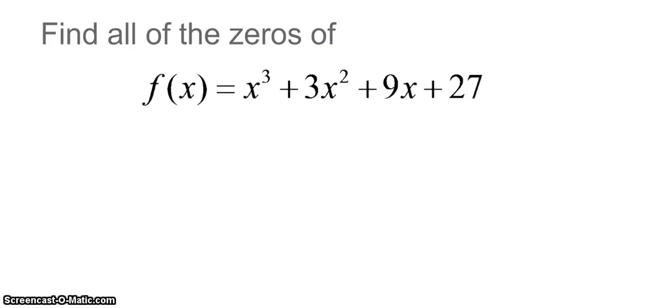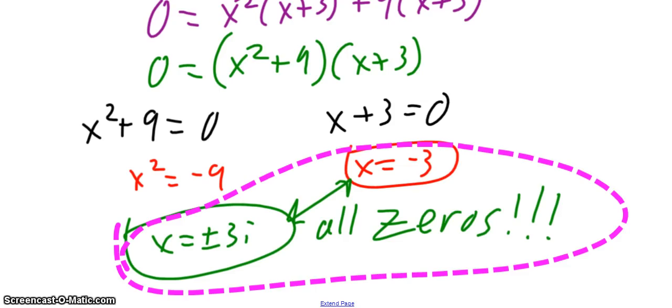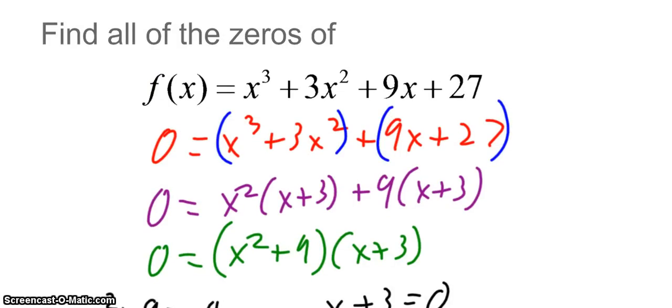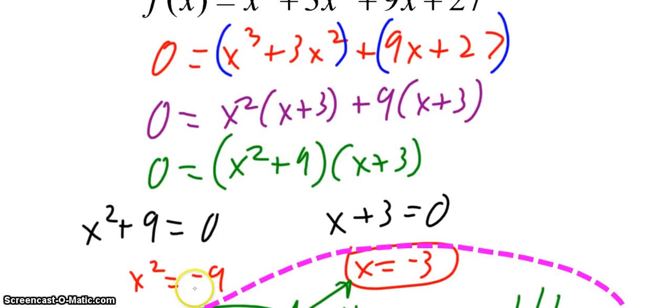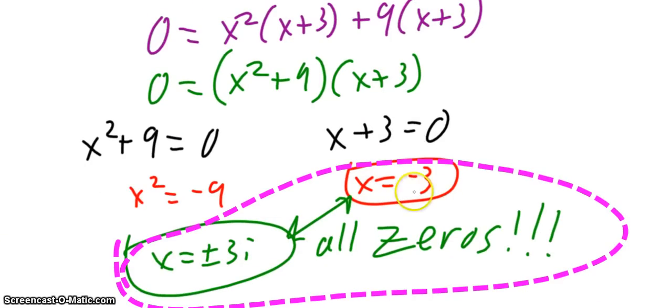Find all of the zeros of the polynomial. You should know how to do this. Go. Pause the video. Unpause when you're ready to check your work. Alright, so we should end up with x equals negative 3 and x equals plus or minus 3i as the zeros. How did we get that? Well, again, you have done this before, so that's why we didn't do an example together. I expect you to be able to do this. Set the function equal to 0, solve for x. I can factor this by grouping. I can take out an x squared from the first group, a 9 from the second group. Set each factor equal to 0. I get x squared equals negative 9, x equals negative 3. Take the square root of both sides. That's negative, so it's going to give me imaginary solutions. So I get x equals plus or minus 3i. So I have 3i, negative 3i, and negative 3 as all of my zeros.